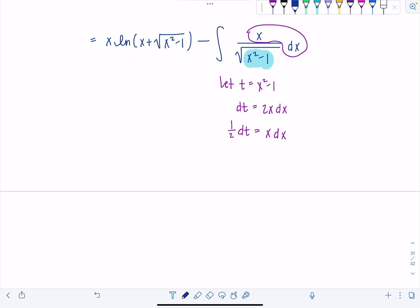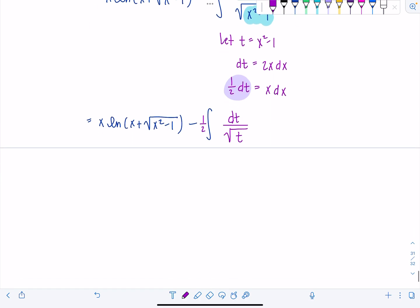Now I'm going to rewrite everything. So we have x natural log x plus rad x squared minus 1 minus, here's my integral. Instead of x dx, instead of this x dx, we have now 1 half dt. I always tell my students, put the constants outside the integral. Okay. 1 half dt over square root of t.